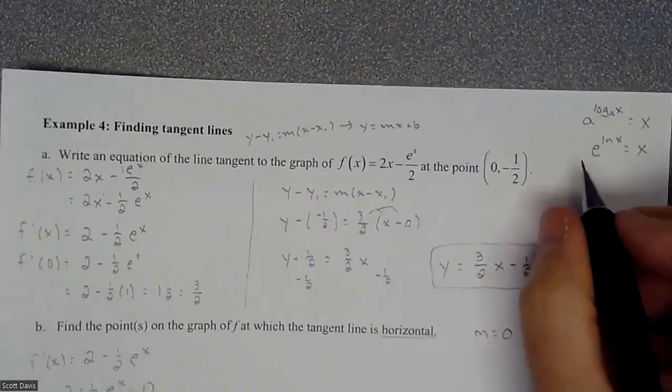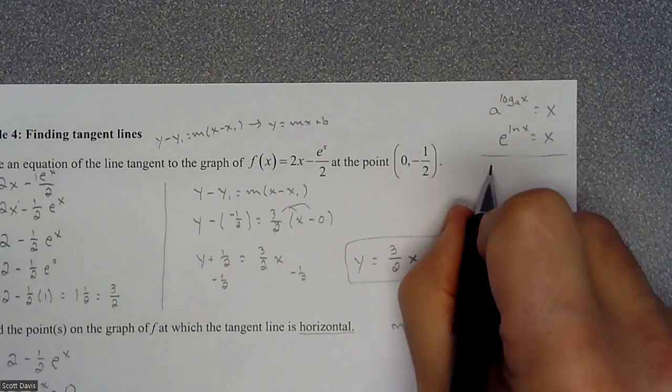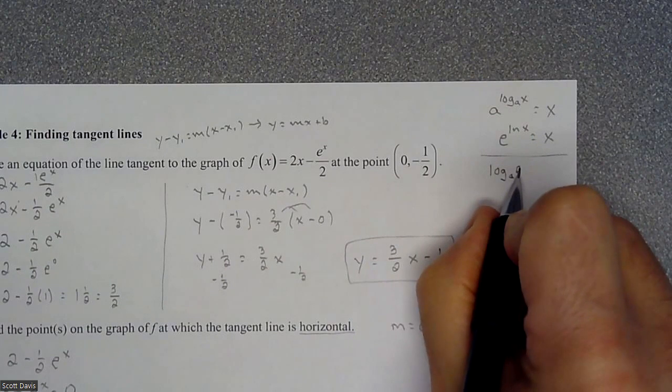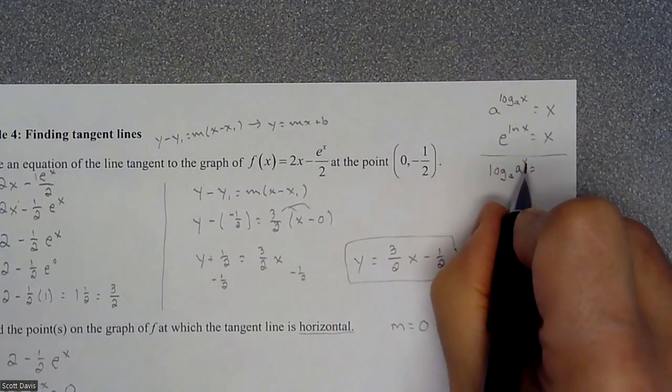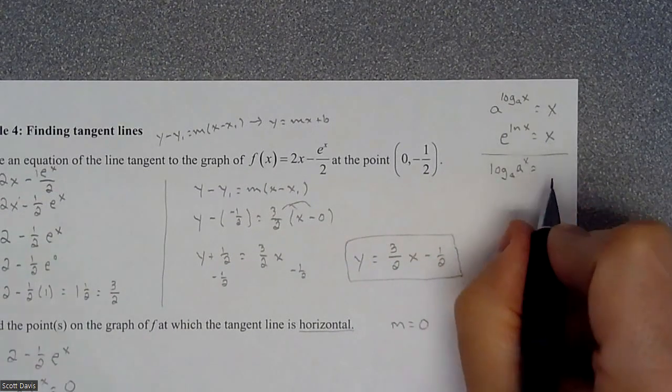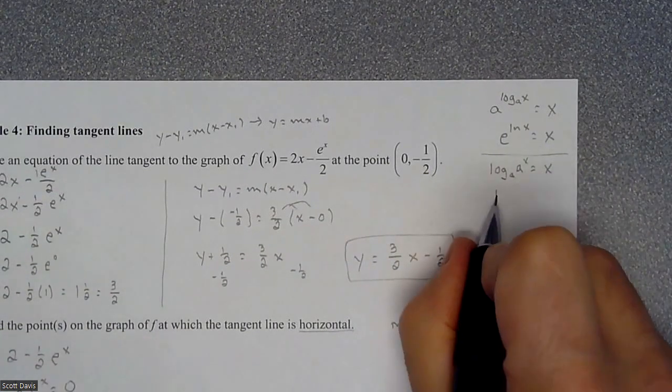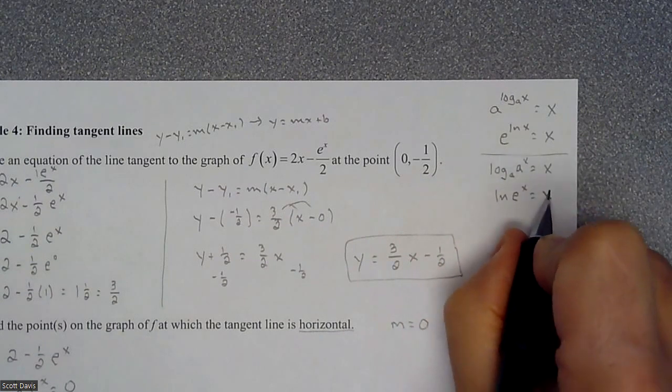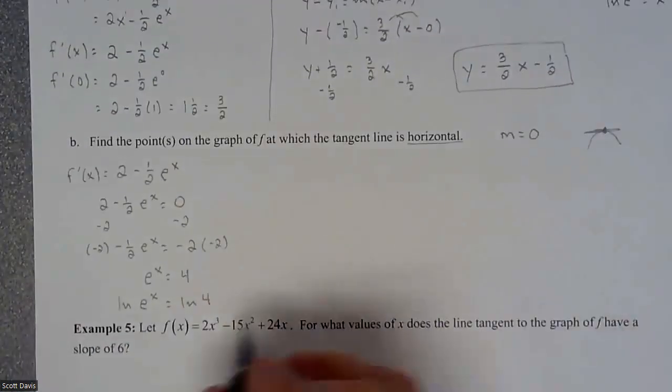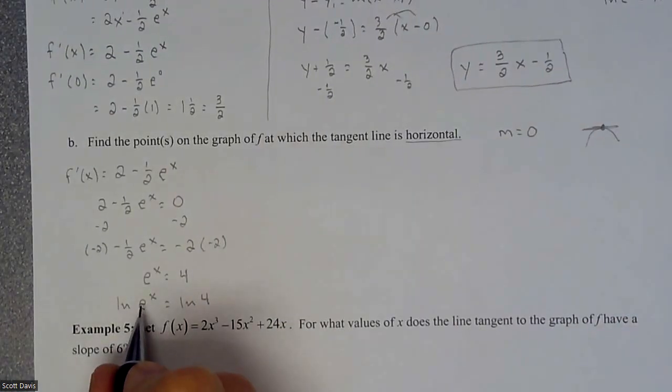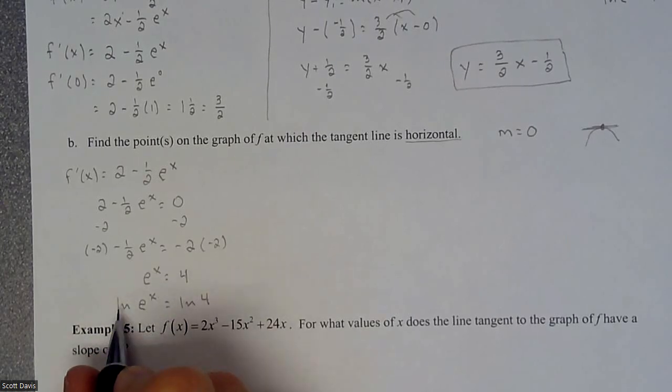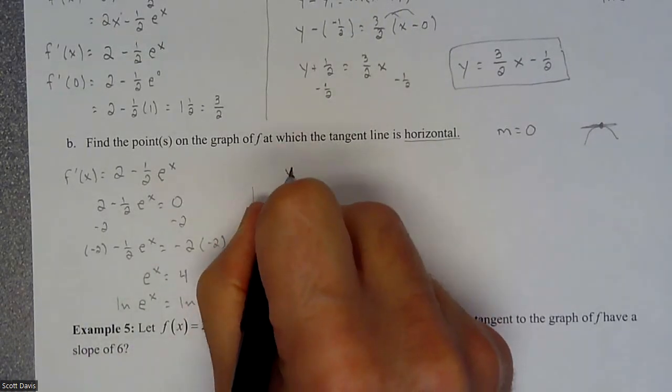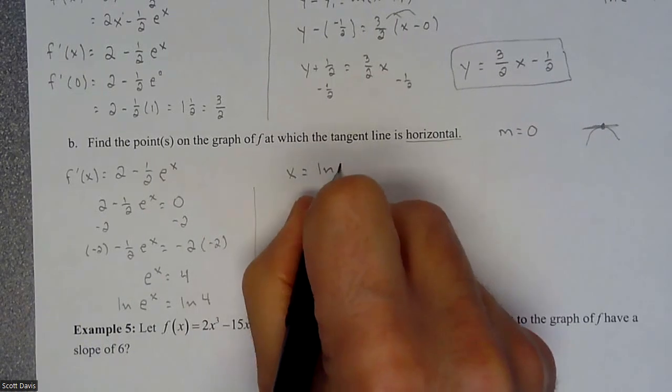So another property is when you have a log base a of a to a power, as long as that base matches that value, then it's just going to also equal x. So if we have the natural log of e to some power, it's just going to become that power. And that's exactly why we do this is we're going to have to log this in order to bring the exponent off of it. So that turns into x equaling the natural log of 4.